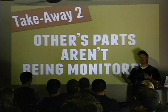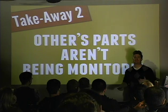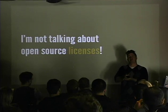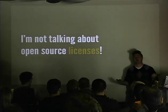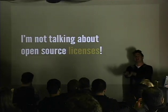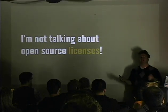Second takeaway: others' parts aren't being monitored. We've established you're using third-party code, but you're not really monitoring it. I'm not talking about open-source licensing - BSD, MIT. Most people, when I ask what open-source they're using, say 'we have BSD license, MIT license.' That's the business reason for caring about open-source. What I'm talking about is third-party updates: when those libraries get updated, how do you know?